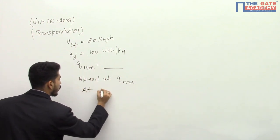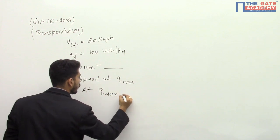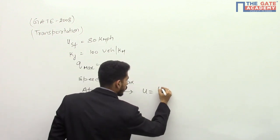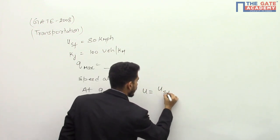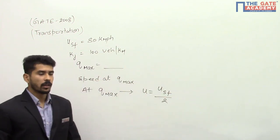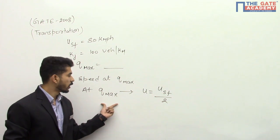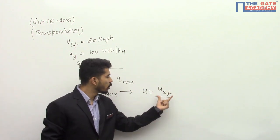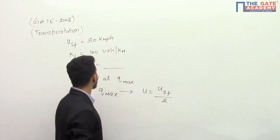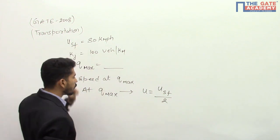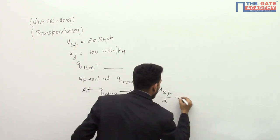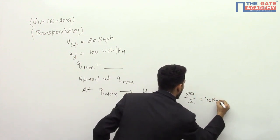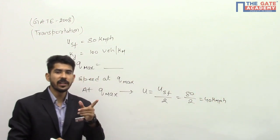From speed-density relations, we know that at q_max, the speed u equals u_sf divided by 2. Since u_sf is given as 80 kmph, we get 80 divided by 2, which equals 40 kmph. So the speed at maximum flow is 40 kmph.